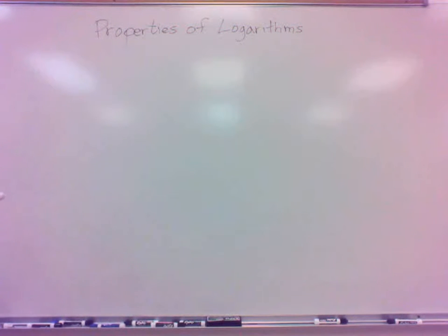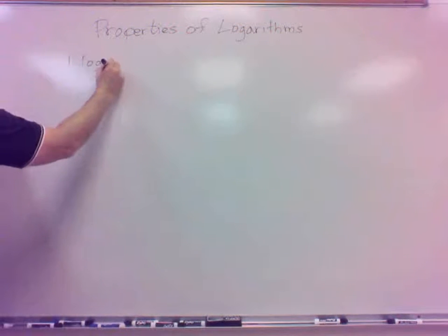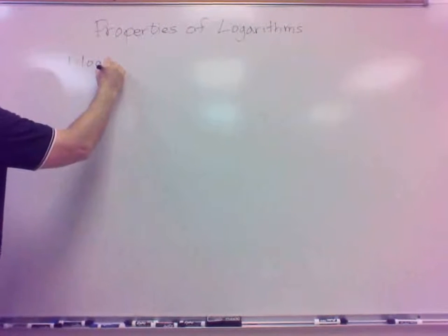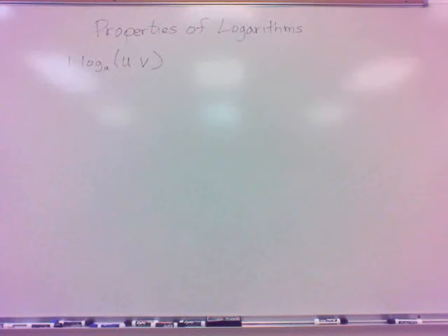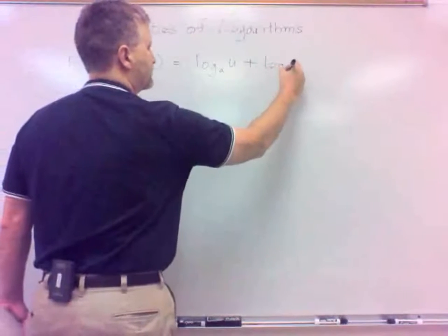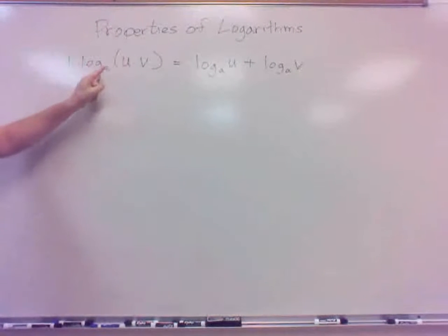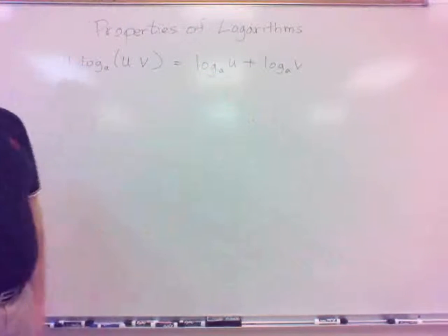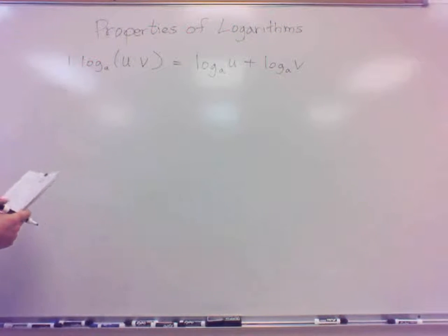The first property: if I have the logarithm base A — the base can be anything, we usually denote it generically with an A — and I have two things multiplied together inside my logarithm, it turns out I can expand those into two logarithms. But the logarithms are not multiplied; they are added. Going this direction, if I've got one logarithm I can expand that into two logarithms added together.